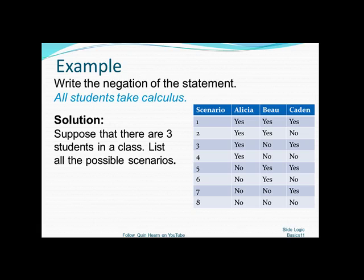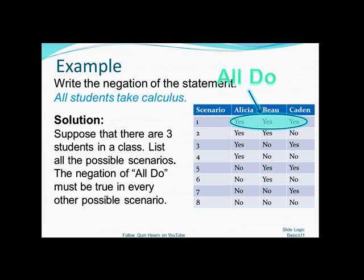But maybe Alicia and Bo take calculus, but Caden doesn't. That would be row two and so on. So our statement is that they all do. That's only one scenario out of the eight distinct different scenarios. So the negation of this statement has to take every other possible scenario into consideration.